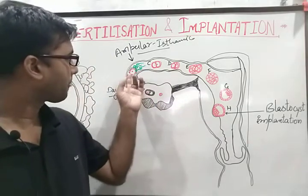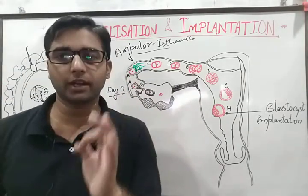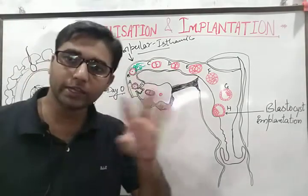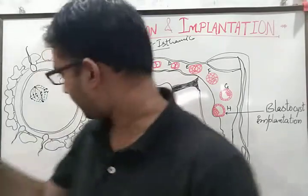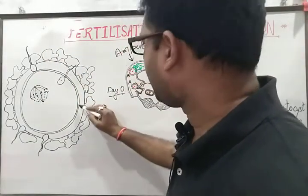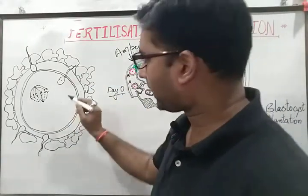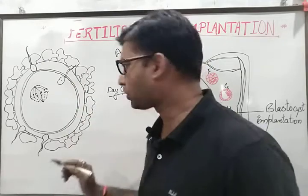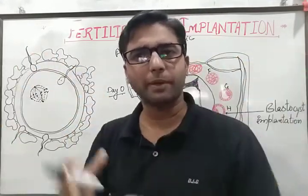After this, if fertilization takes place, then meiosis will be further processed. Think about this: the egg is from day 0, and the sperm — or male gamete — has reached at the same time. In fact, many male gametes have reached simultaneously.